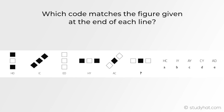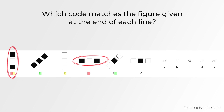Let's go back to the first question and start tackling it. We have to find the code to this shape here. Firstly, I'll start by underlining any repeated letters. I can see H here and here, D is also repeated, and C is repeated as well. There doesn't seem to be any more repeated letters.